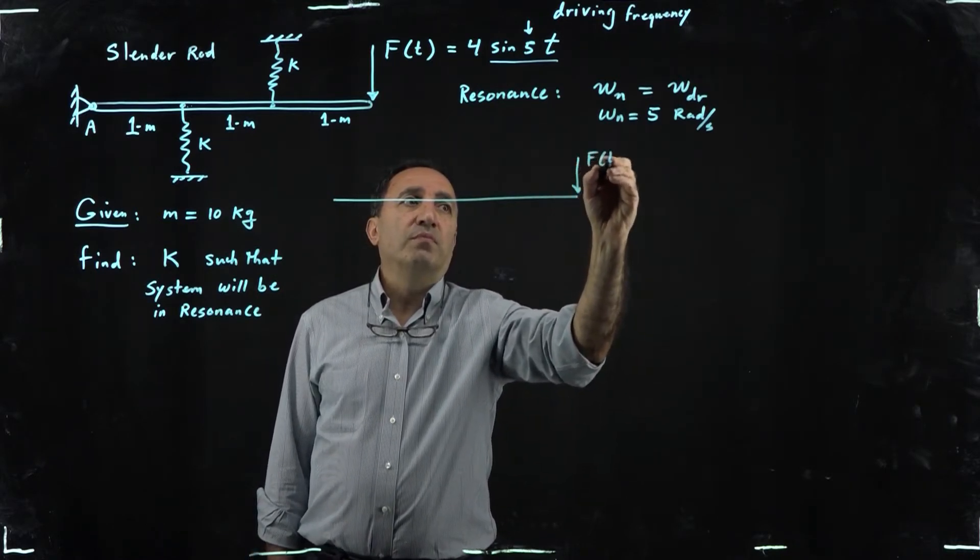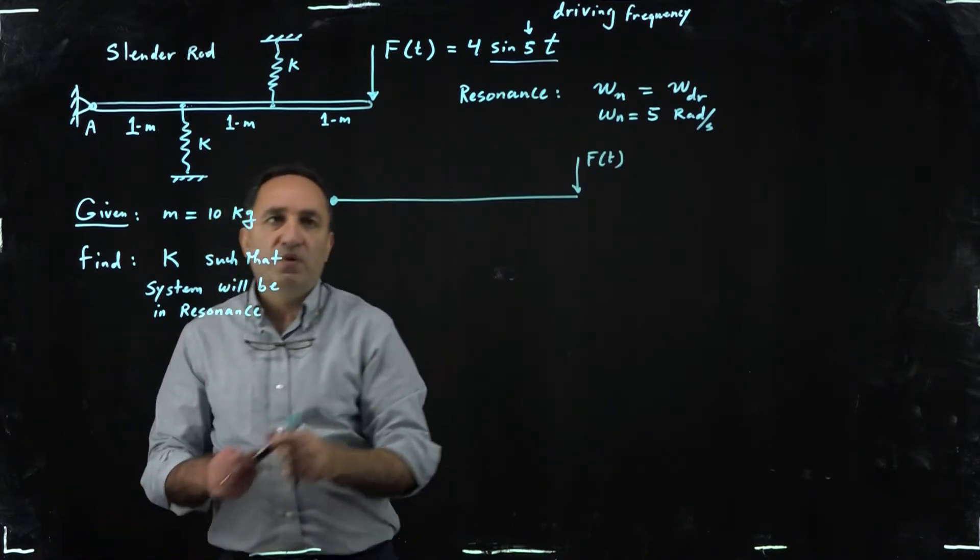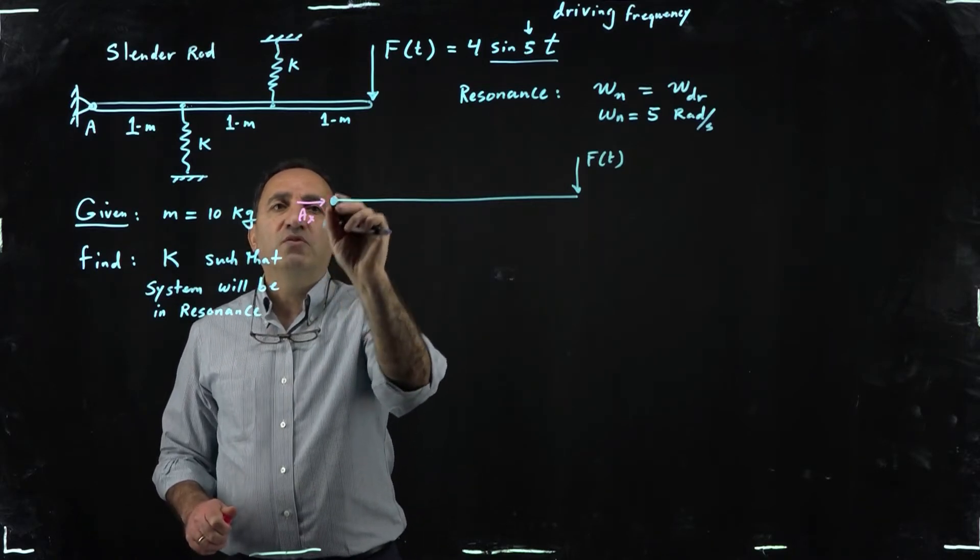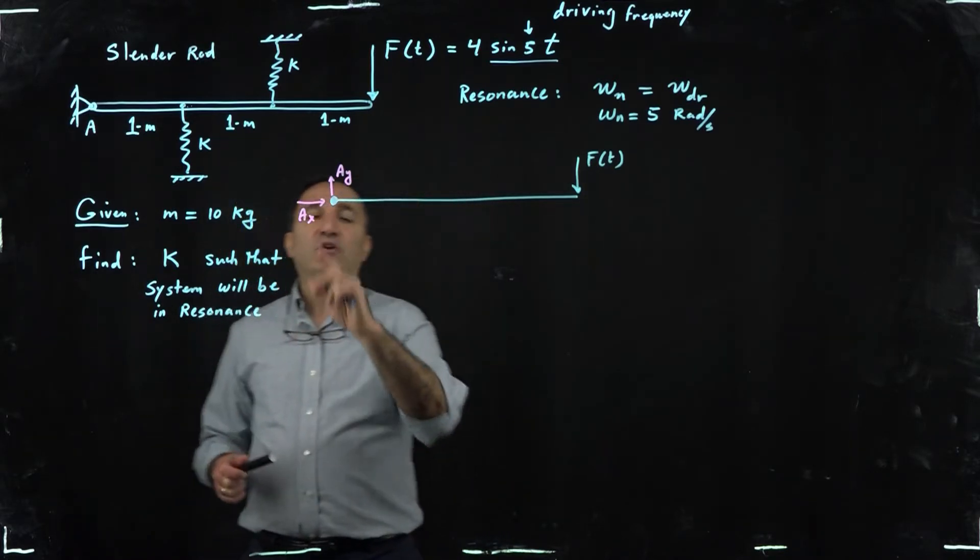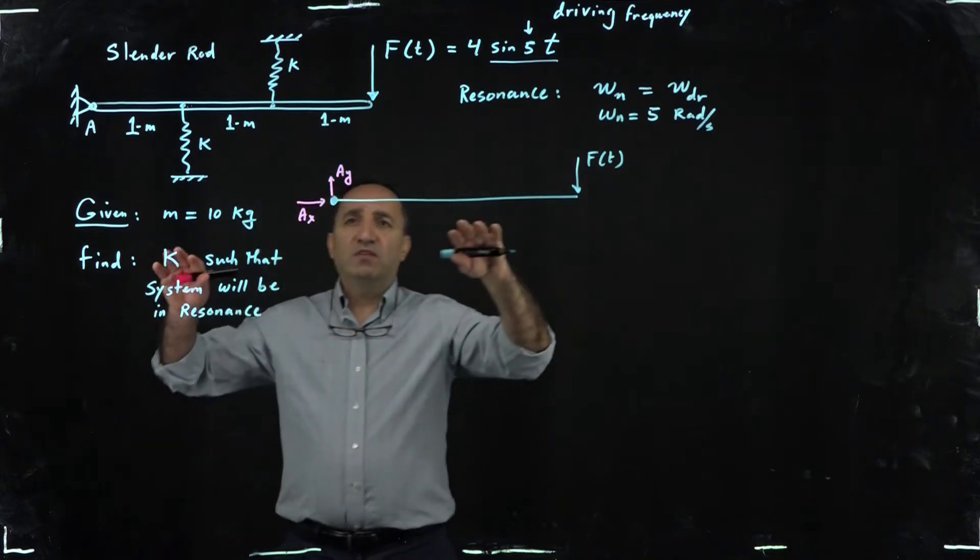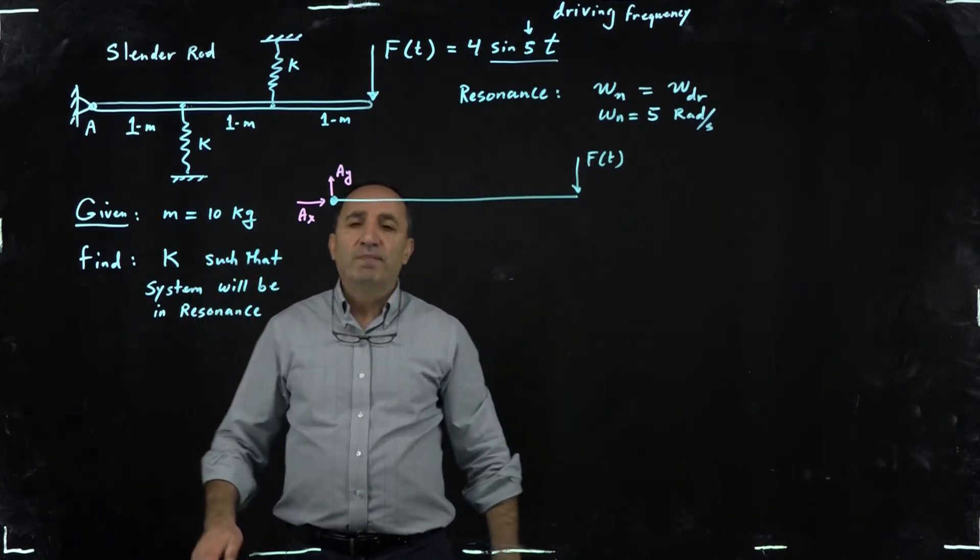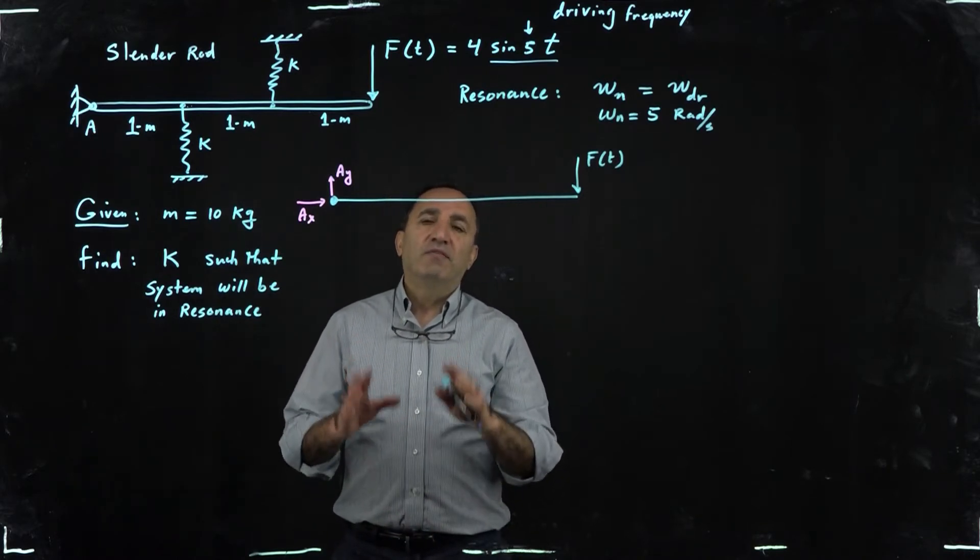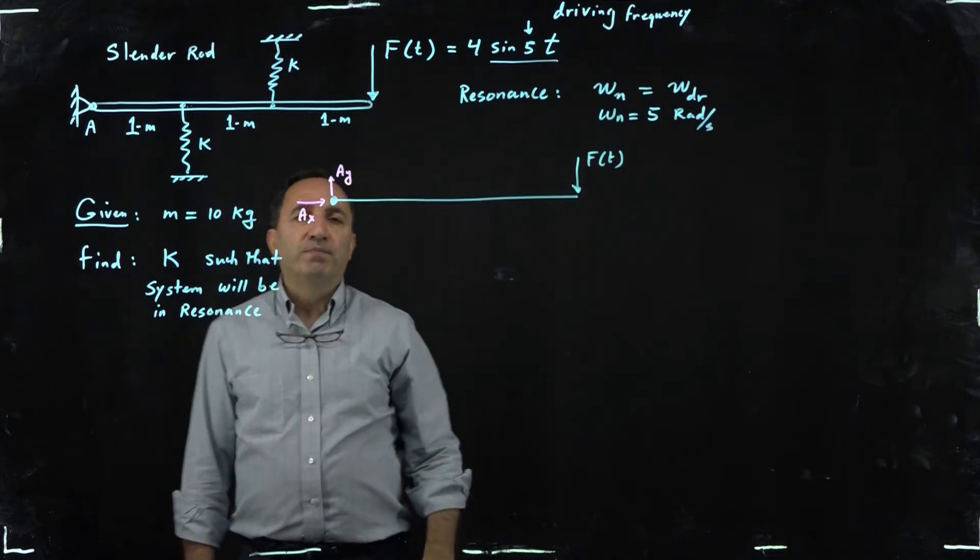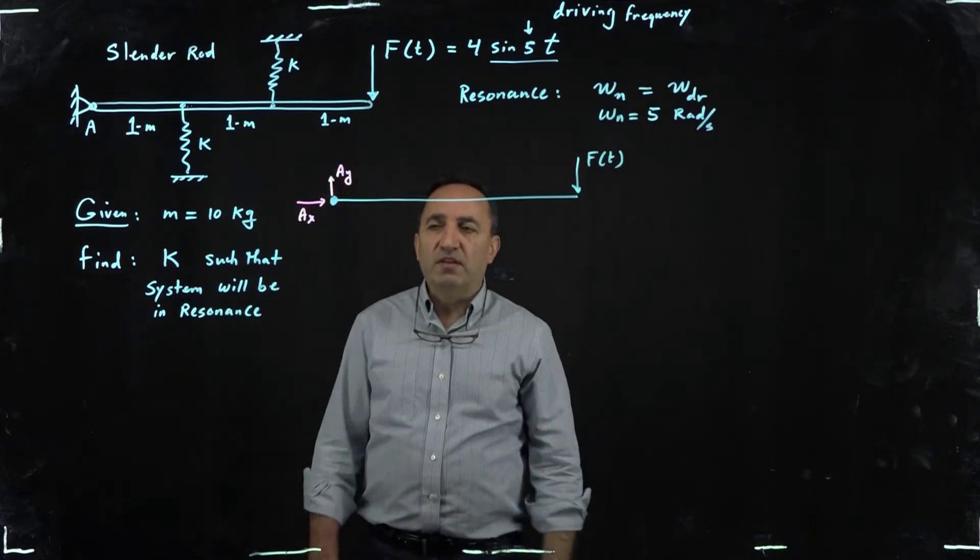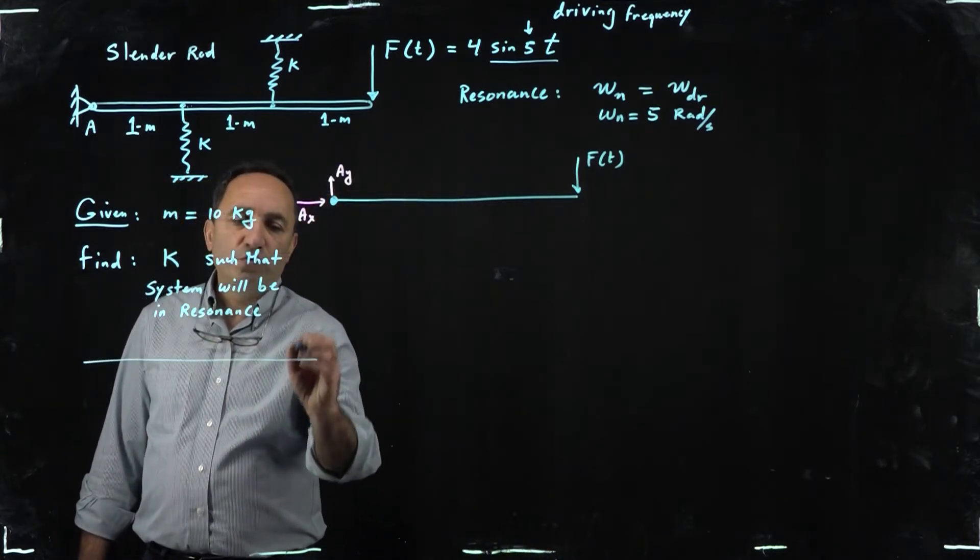So obviously we have this force here which is given. We'll be taking moment about this point, point A. Gravity, well typically we have reactions here but those reactions are not really important to us. Now I have to make a note here that gravity does not play a role here. So assume that this system already has sagged a little bit, right, it has rotated a little bit, reached the static equilibrium, then you apply the force. If you do a complete analysis actually you notice that the effect of gravity is out, so I'm not going to even put an mg term in the middle of this bar. Okay, maybe another video show you why that's the case, show you the analysis, a complete analysis.